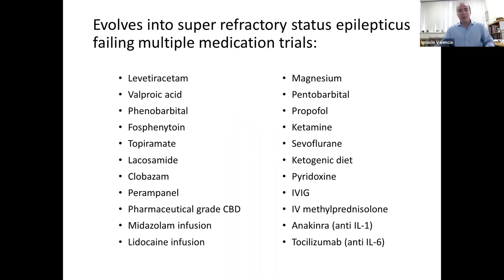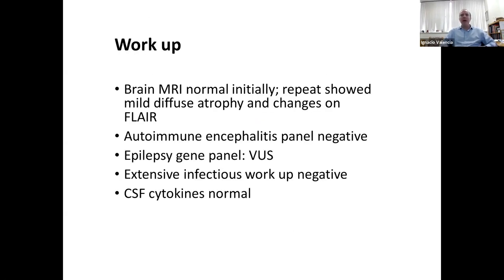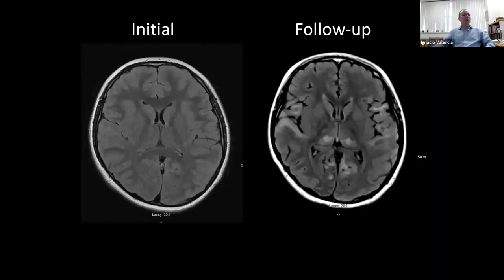He evolved into a very refractory, super-refractory status epilepticus, and all these medicines were tried at some point. He stayed in the hospital for a long time to try all these medicines. The workup included an MRI that I'm going to show next, and basically his workup was pretty much negative. The autoimmune encephalitis panel was negative, the epilepsy panel had some variants of unknown significance, and an extensive infectious workup was negative. We did even cytokines in his CSF, which were also negative.